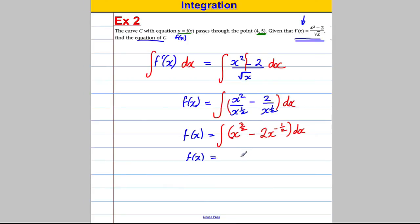f of x is therefore equal to, add 1 to the power, so it would be 5 over 2, and then divide by the 5 over 2, so 1 divided by 5 over 2. Keep your takeaway. Add 1 to the power, and you get half, x to the half. Divide by half, so you have 2 divided by half, plus your constant of integration, c.